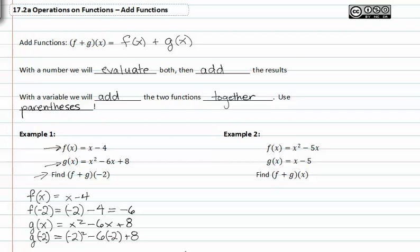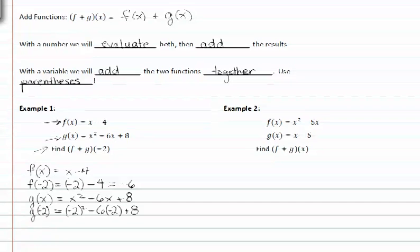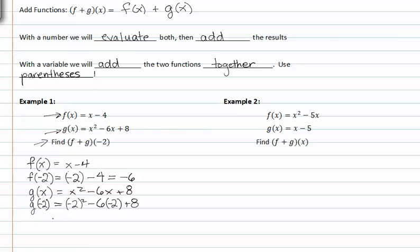This will give us negative two squared minus six times negative two plus eight. If we simplify this, we get g of negative two equal to four plus twelve plus eight, or twenty-four.